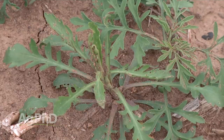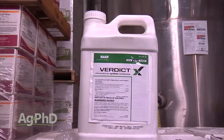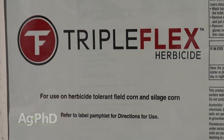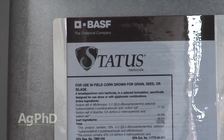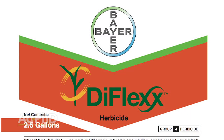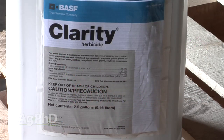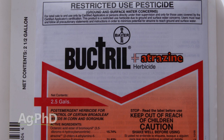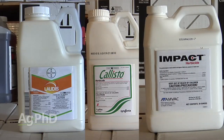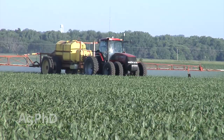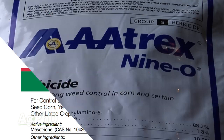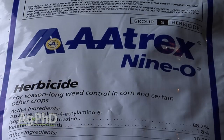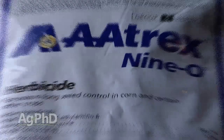In corn, this is a piece of cake. Pre-emerge use Verdict Down — you could even use Triple Flex, Sure Start, or Balance Flex. Post-emerge we like Status the best, though Diflex is really good, and Clarity with a little Atrazine is really good. Even Buctrel Atrazine isn't bad. The HPPDs do a pretty nice job and you can spray them a little later in the season — Callisto, Laudis, Impact, Armazine — especially when you throw in even a quarter pound of Atrazine, which really kicks up the control.